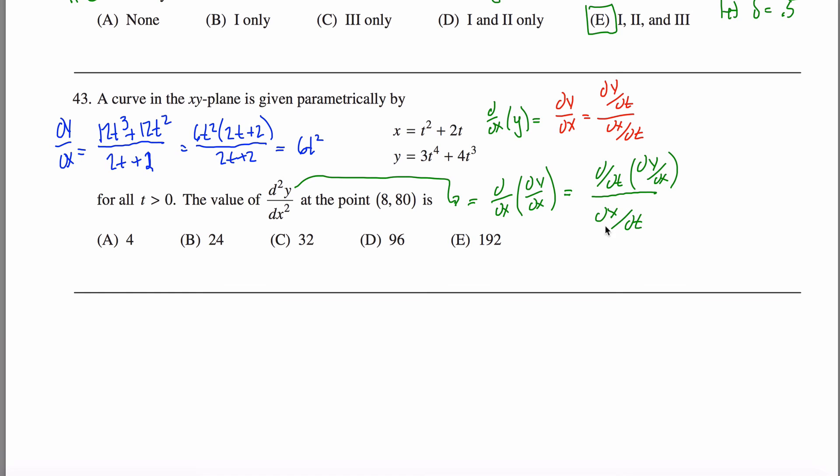But I'm not done yet. So now I want the derivative of that thing that I just figured out, which was 6t squared, divided by dx over dt, which was 2t plus 2. So the derivative of 6t squared would just be 12t over 2t plus 2. So now I have this expression for this guy right here, but I want it at the point 8, 80.